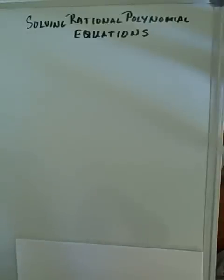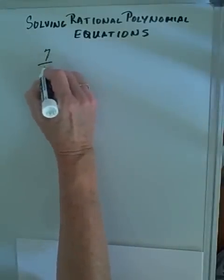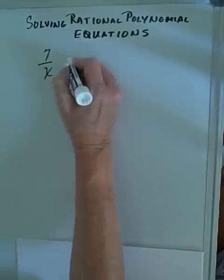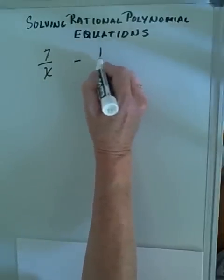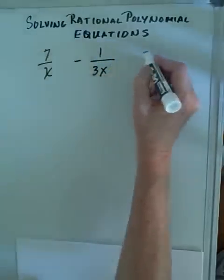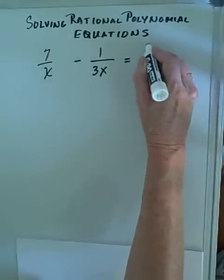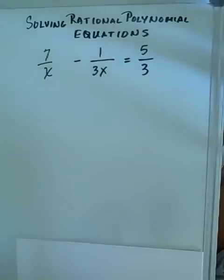We're going to try solving rational polynomial equations. Let's start off with a simple one: 7 divided by x, minus 1 divided by 3x, equals 5 divided by 3.